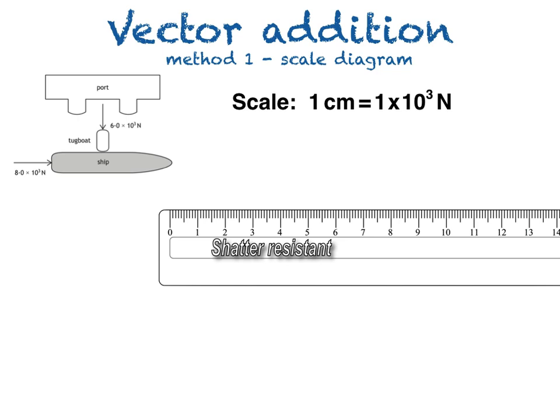First, I'll draw the 8.0 × 10³ N force, which using our scale is represented by a line 8 cm long, from left to right. The most important thing to remember when drawing our diagram is that vectors are added nose to tail. This means that where one vector ends, the next vector begins.